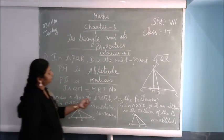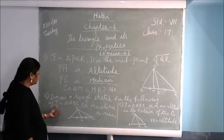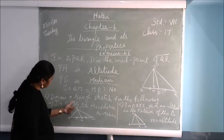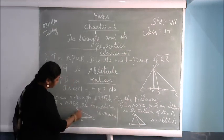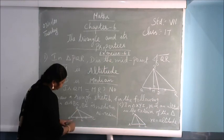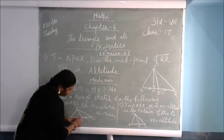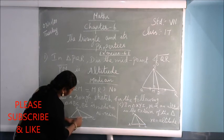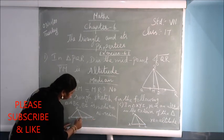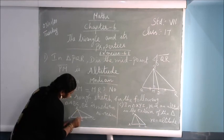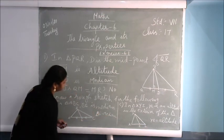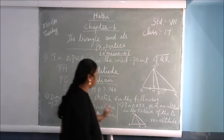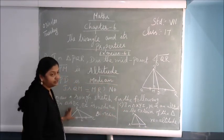Next, draw a rough sketch. First, draw triangle ABC where BE is the median. You first put point E at the midpoint of AC — in the middle — then draw the line segment from B to E. So BE is your median.